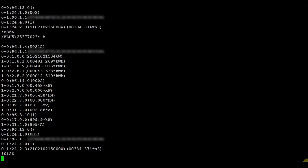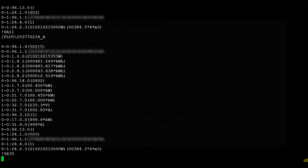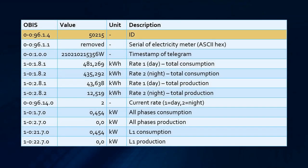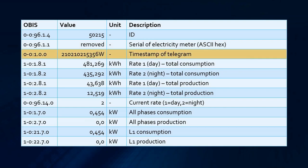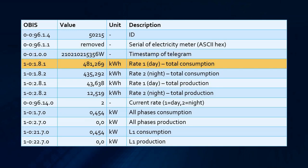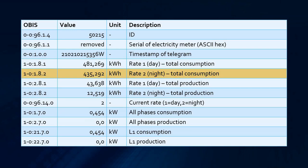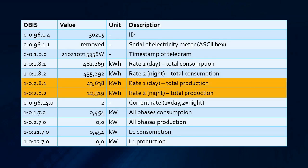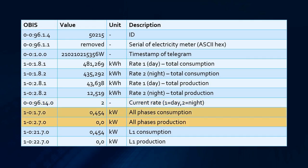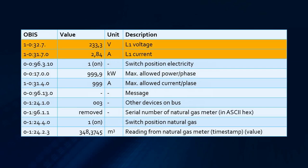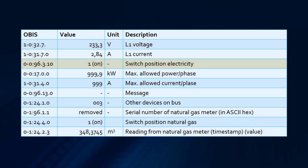Now we are ready to read data from the serial port. As you can see, this looks exactly as what I described before. Let's take a single message from the output and try to map it to the OBIS codes. First we have the ID followed by the serial number of the electricity meter in ASCII hex. Next we have the timestamp of the telegram, then we can see the counter for total consumption during daytime followed by the same for nighttime, and the same for production daytime and nighttime, and which rate is currently active. The next items show current production and current consumption, followed by detail per phase. We can also see the current voltage and current flowing through the meter, and whether the meter is switched on or off.